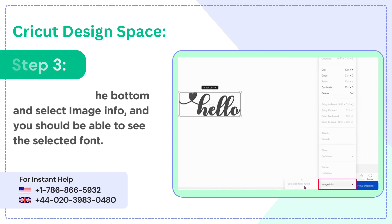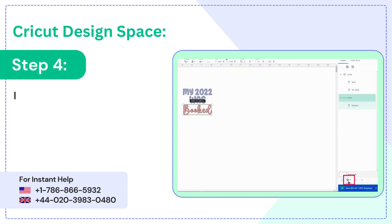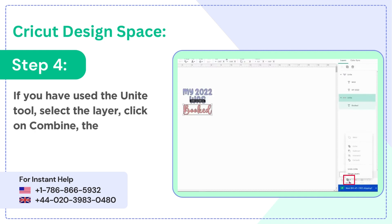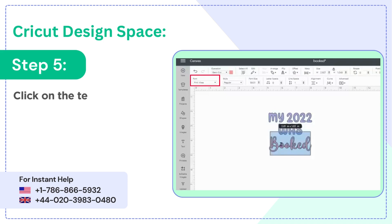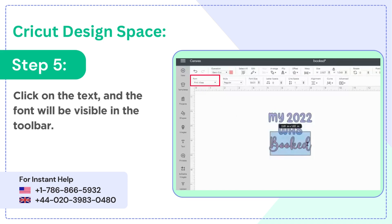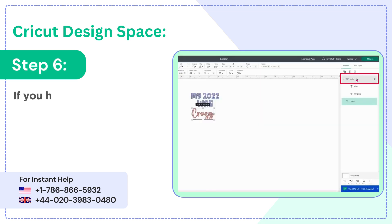Step 4: if you have used the Unite tool, select the layer, click on Combine, then click 'Undo Unite.' Step 5: click on the text and the font will be visible in the toolbar.